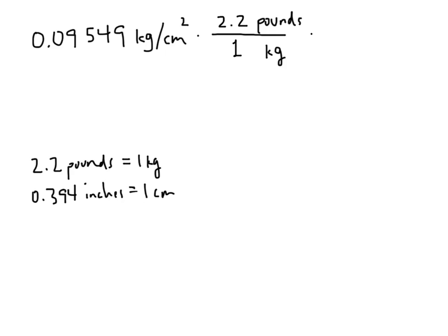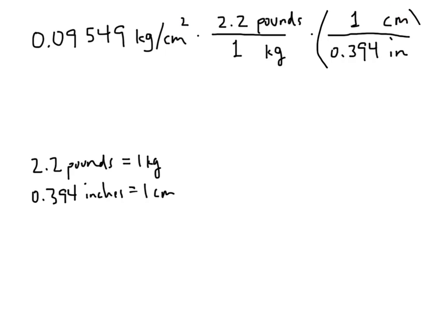For converting square centimeters to square inches, we have 0.394 inches equals 1 centimeter. Since square centimeters are on the bottom of our fraction, we need centimeters on the top of the conversion factor so they divide out. That puts 1 centimeter on top and 0.394 inches on the bottom. But because we have square centimeters, we need to square this entire conversion factor to convert from square centimeters to square inches.